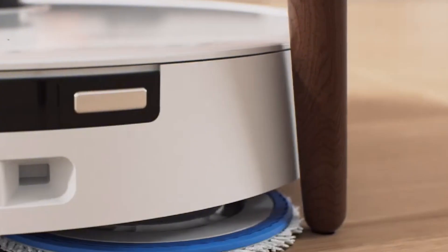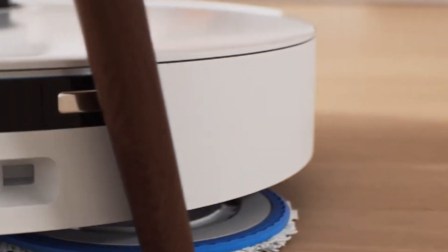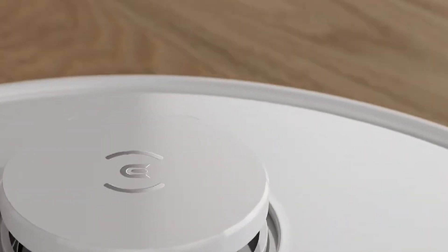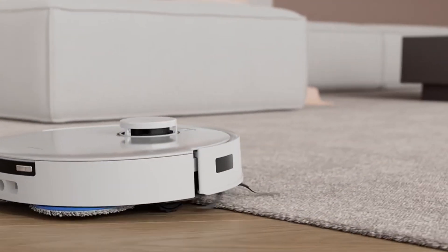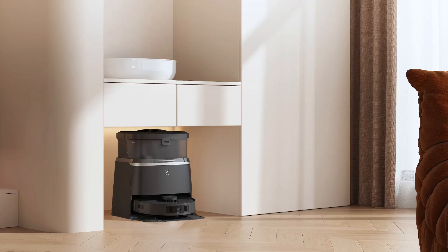In conclusion, the Ecovacs D-Bot T30 is a powerful and versatile cleaning device that offers excellent value for its price. With its impressive features, stylish design, and smart home compatibility, it stands out as a great choice for anyone looking to simplify their cleaning routine. If you're considering investing in a robot vacuum, the D-Bot T30 is certainly worth your attention.